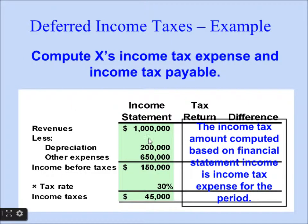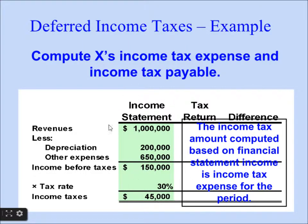For financial reporting, we prepare the income statement using straight-line depreciation of $200,000 and other expenses of $650,000. Revenue of $1,000,000 minus these gives income before taxes of $150,000. Applying the 30% tax rate: 30% of $150,000 equals $45,000 as the income tax expense on the financial reporting income statement.